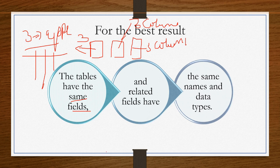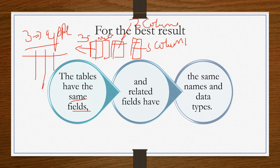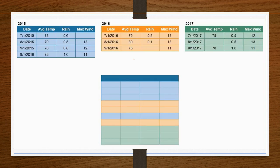Related fields should have the same names and data types. For example, if we have serial number, name, and country in the first file, the second and third files should also have serial number, name, and country. Then it will not create any conflict and you can easily append the data.